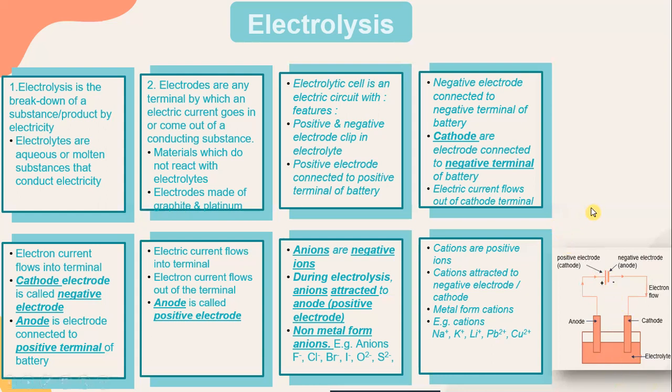An electrolytic cell is an electric circuit featuring positive and negative electrodes dipped in an electrolyte. The positive electrode is connected to the positive terminal of the battery, and the negative electrode is connected to the negative terminal. The cathode is the electrode connected to the negative terminal — electric current flows out of the cathode terminal, while electron current flows into the terminal. The anode is the electrode connected to the positive terminal — electric current flows into the terminal and electron current flows out.